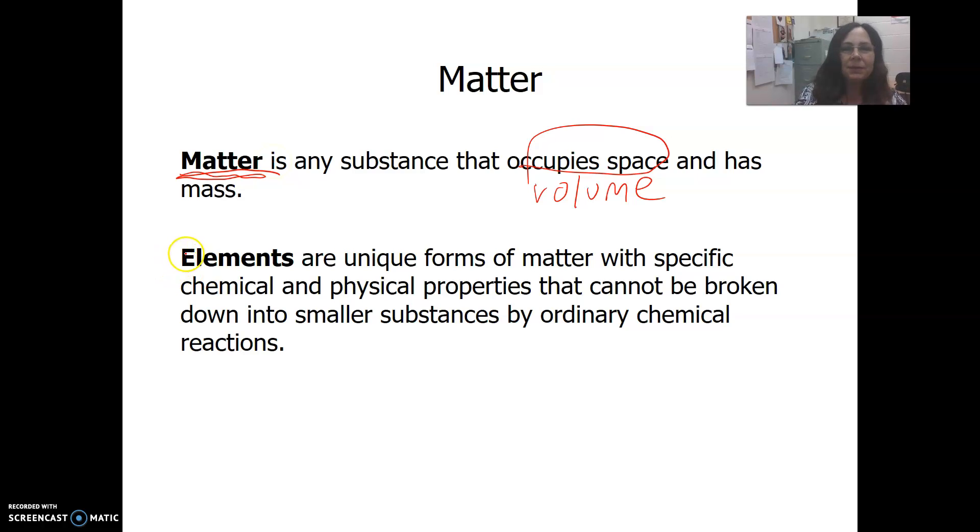Elements are the simplest forms of matter. They're the substances that are listed on the periodic table of the elements. Don't worry, we don't have to memorize anything off the periodic table, but we will look at some of the information you can get from it. Elements cannot be broken down into smaller substances.